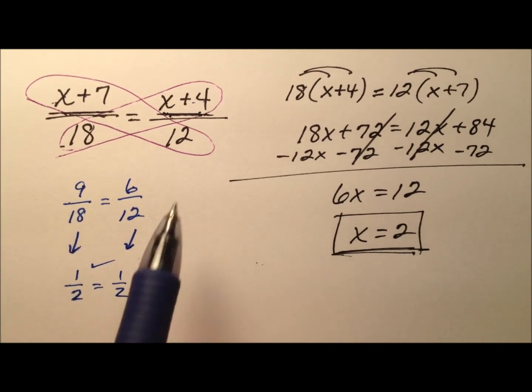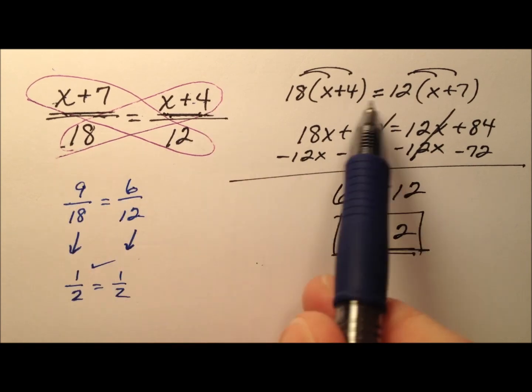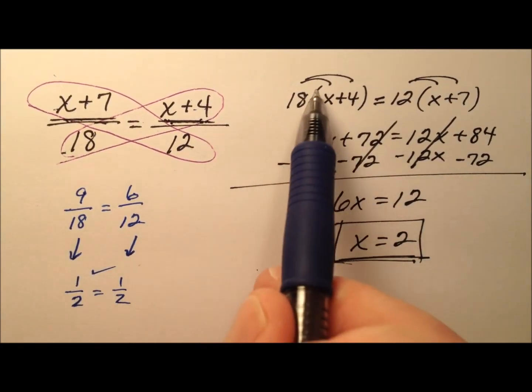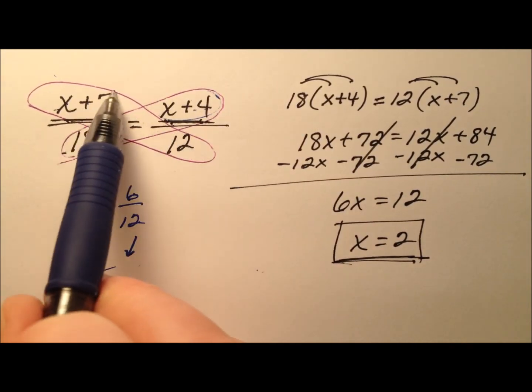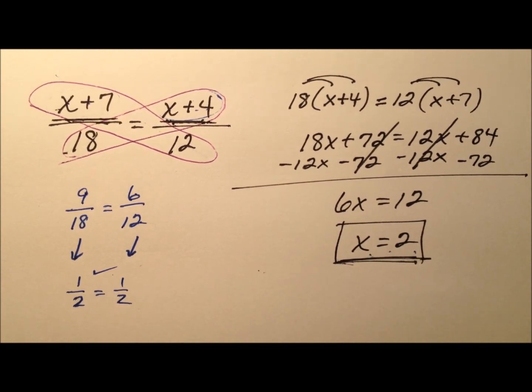So in this case, with the proportion, we solved by setting these cross products equal to one another. We distributed across these binomials and we solved in the usual manner. So we saw x equals 2 and we plugged it in and it worked.